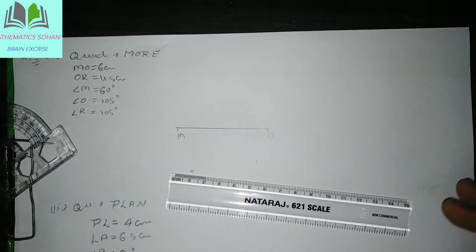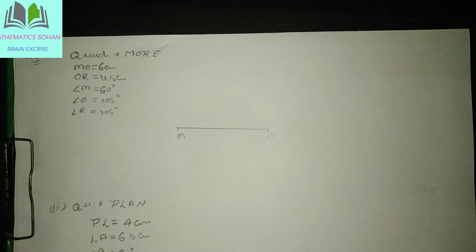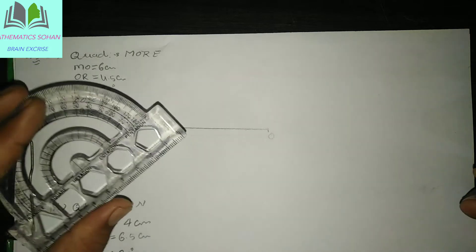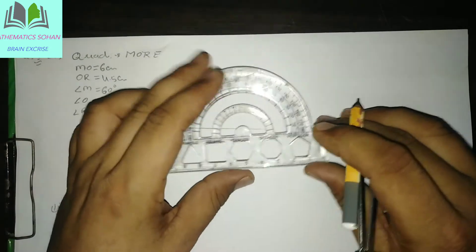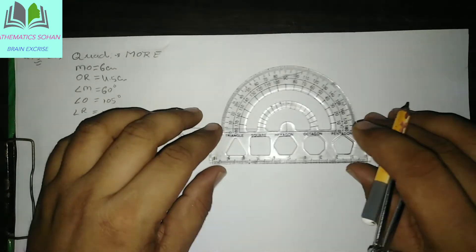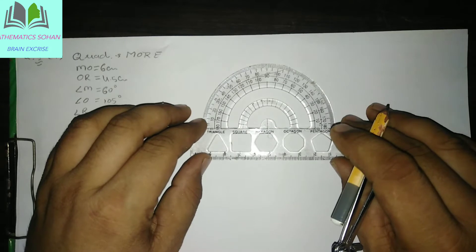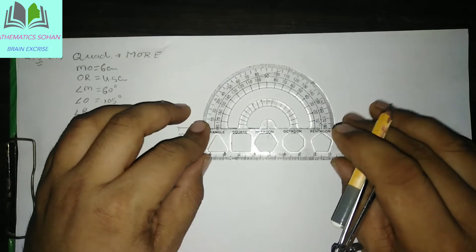We can find the skills. O ke uppar 105 degree angle bana dete hain. Compass se bana sakte hain, magar is mein protractor use kare hain kyunki next angle hain — 85, 95 — ke bhi aane hain. Toh protractor ka use karke bhi isko bana sakte hain. Protractor kaise use karna hai, dekhiye — is line ke uppar bilkul line ke uppar, aapne yahan pe focus karna O ke uppar le aana.